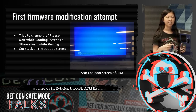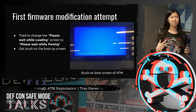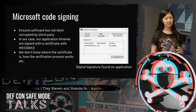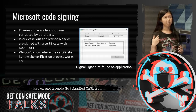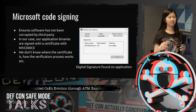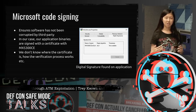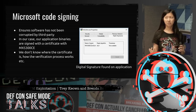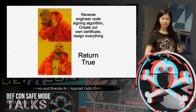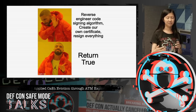The manufacturer had enabled Microsoft code signing to ensure software hasn't been corrupted by third parties. The application binaries are signed with a certificate named MX5300CE. To bypass it, we had two options: reverse engineer the code signing algorithm and resign everything, or find the certificate verification function and return true. We chose the latter. We dug into the kernel structure in nk.bin — a bin.fs format containing records — and found the kernel isn't signed itself, even though the application binaries are.